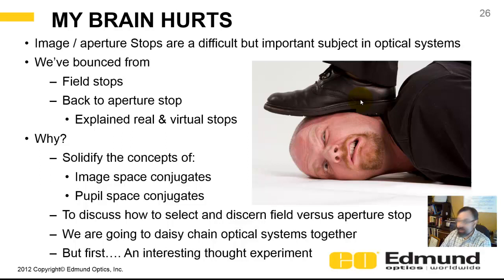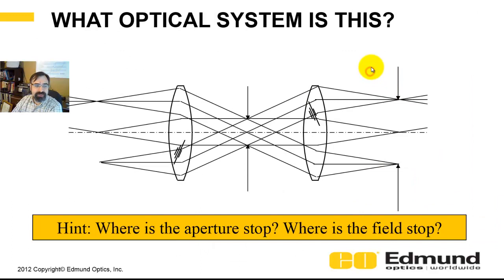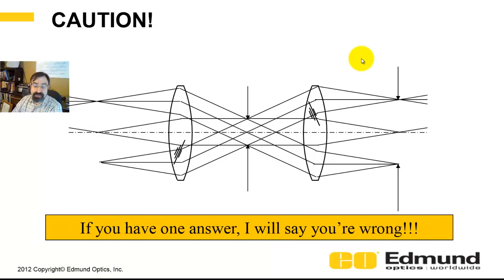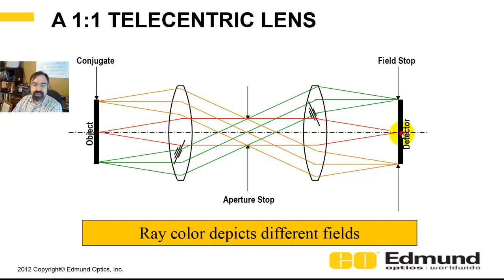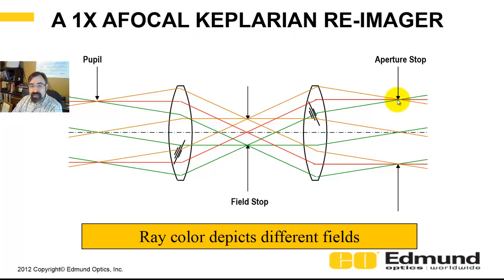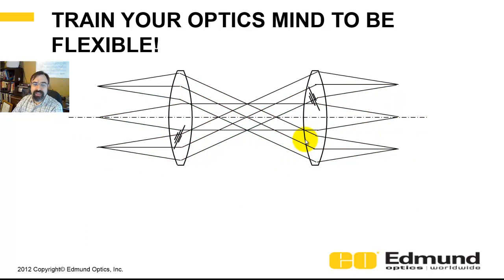We're going to do that by daisy-chaining optical systems together, but first I want to run a thought experiment. Here's a layout of a system — what is this optical system? Where's the aperture stop? Where's the field stop? This is a trick question: if you say it's a one-to-one telecentric with the center as the aperture stop and the right as the detector, I'll say you're wrong — because it's really a one-to-one afocal Keplerian, where the center is a field stop and the right is an aperture stop. You need to train your mind to be flexible and understand the original intent of the optical system.